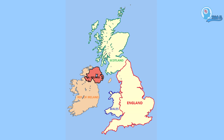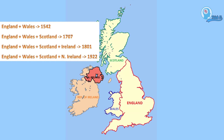If we go into the history, England and Wales combined together in 1542. After that, Scotland also joined them in 1707. Then later on, Ireland also joined in 1801. But in 1922, the major portion of Ireland got separated, and that major portion was Republic of Ireland.